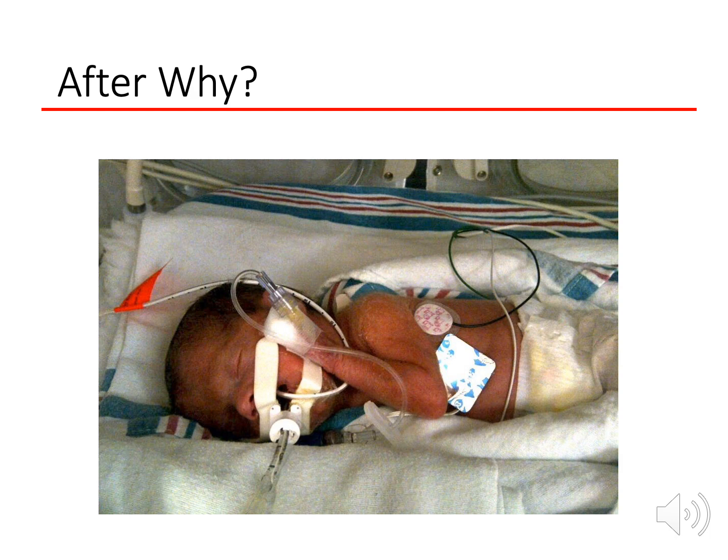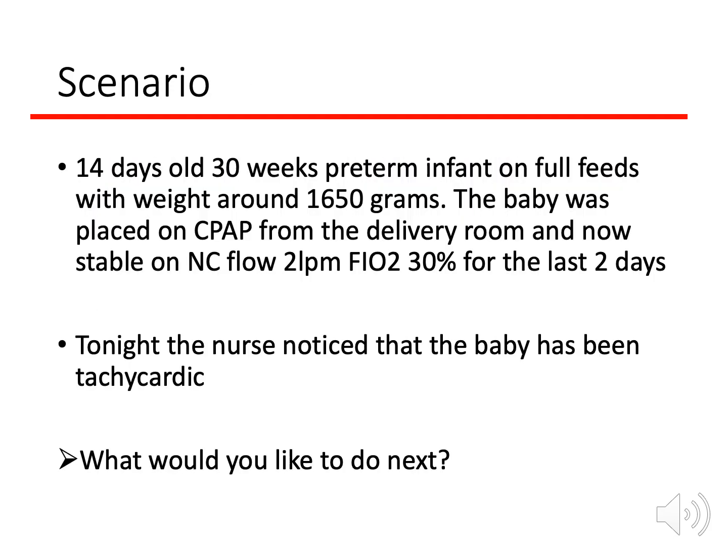Let's apply this to a case. A baby is 14 days old, ex-30-week preterm infant, corrected age now 32 weeks, on full feeds, weight 1650 grams. The baby was on CPAP from the delivery room, stable for a long time, and is now on nasal cannula at 2 liters per minute, FiO2 30%, for the last two days. Tonight the nurse noticed the baby has become tachycardic — this is something new that wasn't there before. What would you like to do next?